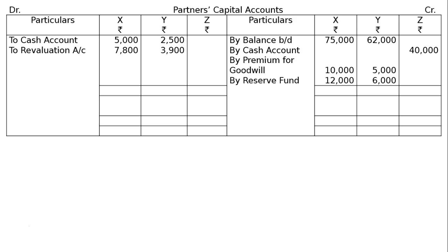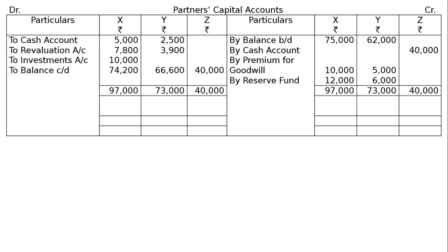Next one is revaluation loss: to revaluation account for Rs 7,800 and Rs 3,900. Then, investments are taken over by X at the revised value of Rs 10,000 — journal entry is X's capital account debited to investment account, so to investment account in X's capital column Rs 10,000. Next, totalling of the credit side — take it to the debit side. Totalling for X is Rs 97,000, for Y Rs 73,000, for Z Rs 40,000. Balance carried down: X Rs 74,200, Y Rs 66,600, Z Rs 40,000.